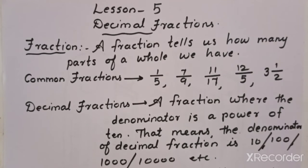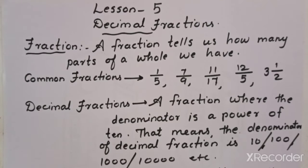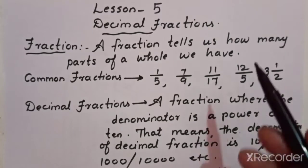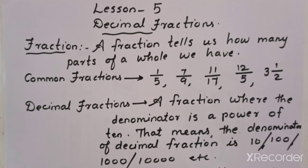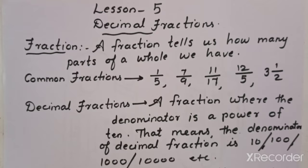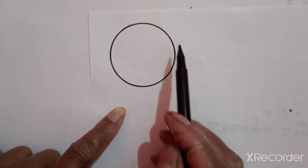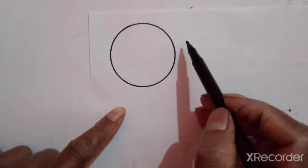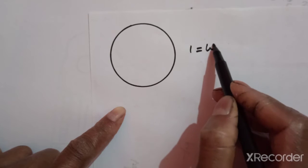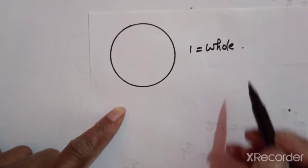So, what do you mean by fraction? Fraction tells us how many parts of a whole we have. It's not complete — a whole object we have divided, and how many parts we have selected — that is a fraction. For example, this is a whole object — one circle. One means the whole.